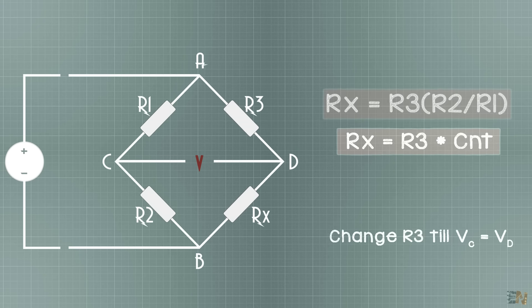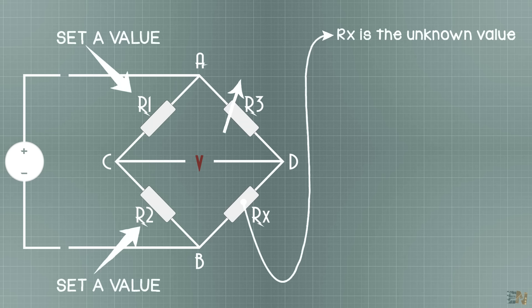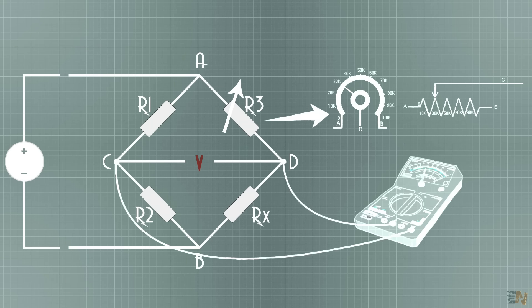OK, so now we know what value of resistor we should have in order to have zero volts between point C and D. But the Rx is the unknown value. So what we do is to put R1 and R2 to a known value but we make R3 to be variable. We change the R3 value till the voltage between C and D is zero and that's when the bridge is balanced.